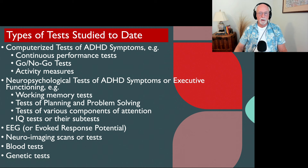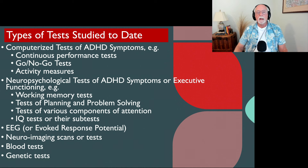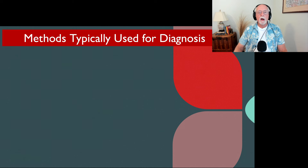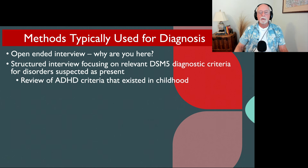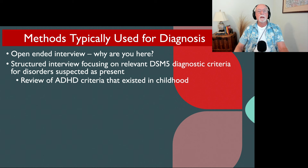I wish we had a test for ADHD that we could use in clinical practice. We simply don't. So what we are left with is what we're left with in all of psychiatry and psychology — there are no tests, no objective measures for any mental disorder at this time. Consequently, we have to fall back on our tried and true approach to diagnosis, which is an open-ended interview: what brings you here, what are you concerned about, and so on. Following that up with a structured interview, going through the DSM criteria for the relevant disorders we think might exist, given what you've told us, including those for ADHD.